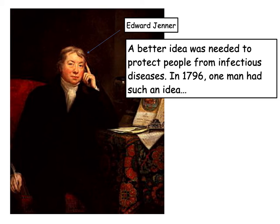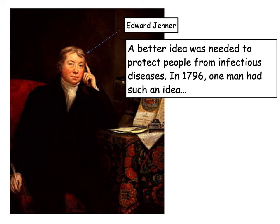James recovered from the cowpox, and then Jenner went back and infected him with smallpox. Luckily for James, he didn't catch the smallpox. Jenner concluded that cowpox makes you immune to smallpox, and repeated his experiment on many local people. He then wrote up his findings in a book called 'An Inquiry into the Causes and Effects of the Variolae Vaccinae.' This is the moment we first get vaccinations in history — the word 'vaccine' comes from the Latin 'vacca' for cow.